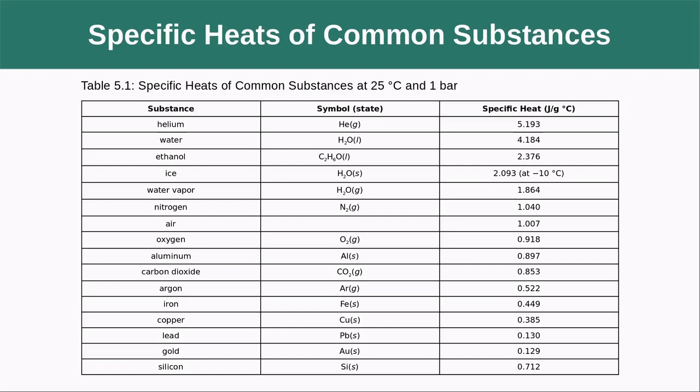We can look up specific heats for different substances. For instance, helium has a specific heat of 5.193 joules per gram per degree Celsius. A lot of our calculations will involve water, which has a specific heat of 4.184 joules per gram per degree Celsius — that same number we saw with the calorie conversion.